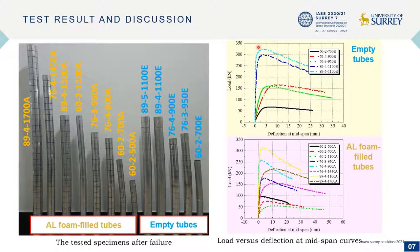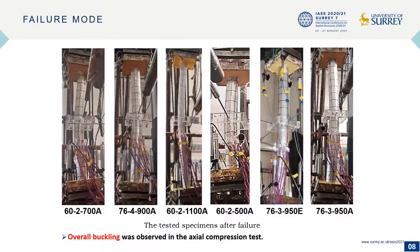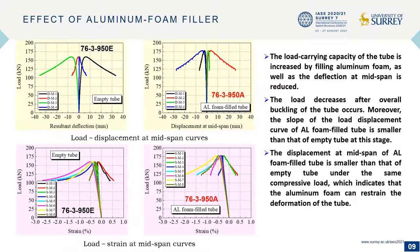Overall buckling was observed, and the load decreases after it reaches the critical buckling load. These photos show the overall buckling of the tubes in the axial compression test.